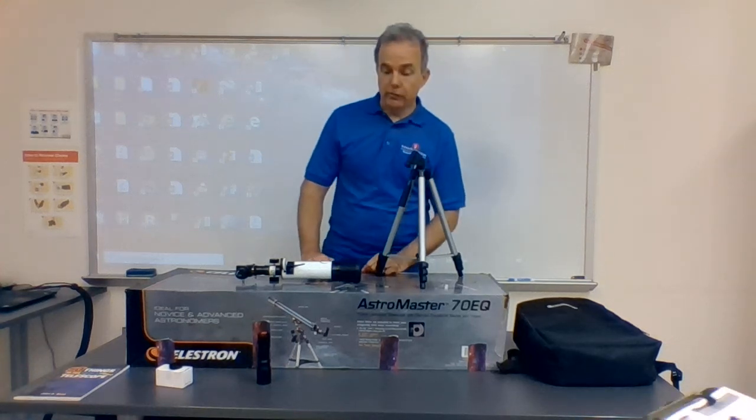All right, welcome back. So we've talked about telescopes that you made from the Carolina biological kit just a minute ago from Galileo and Kepler. Now we're going to go to what the students would consider probably more real telescopes.